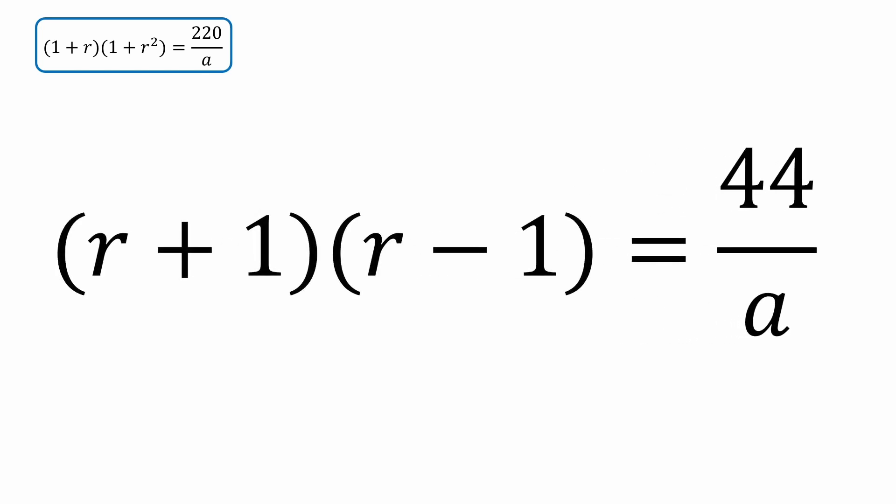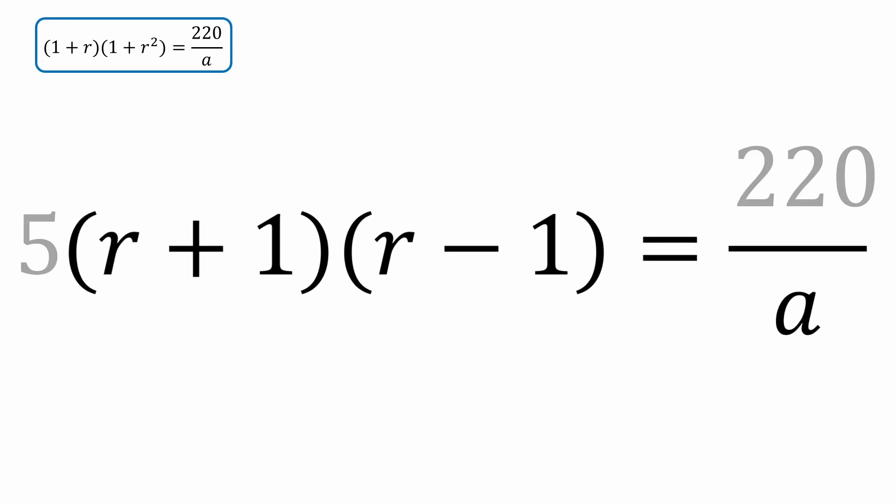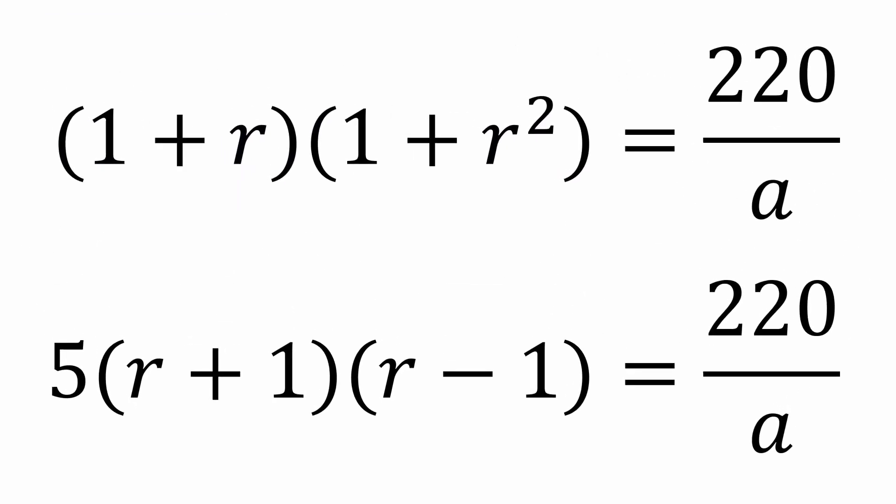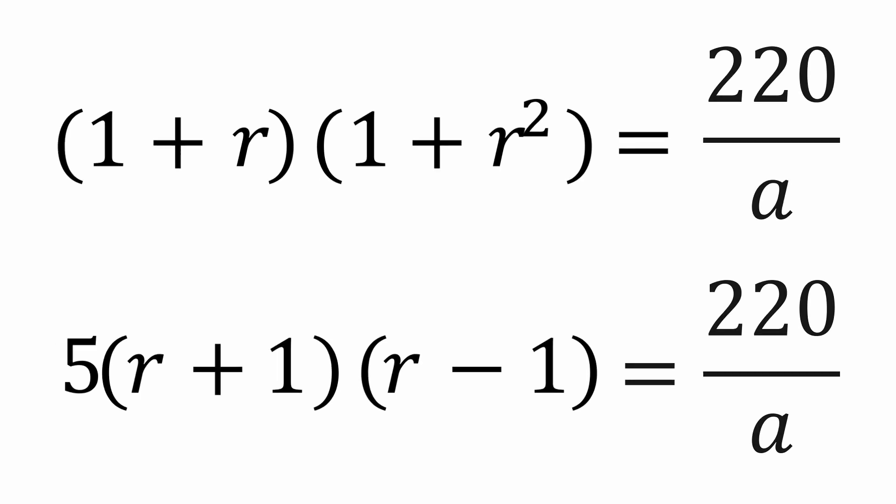And now I'm going to multiply both sides by 5. Why did I do that? Because our previous equation is also equal to 220 over a. So now I'm going to set these two equations equal to each other and have one equation in terms of r.